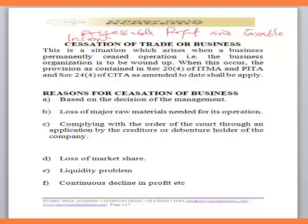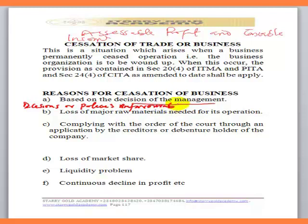We have identified what cessation actually means — it simply means when the life of a business comes to a permanent end. Why would a business fold up? What are the reasons a business organization closes down? One reason is bad management or the decisions of management. Sometimes management teams make certain decisions or policies that are unfavorable to a business, and when such decisions or policies are made, they affect the overall long-term objective of the business.